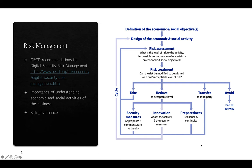If you decide to reduce the risk, you can put in place security measures — controls — to actually mitigate or reduce the risk. You can also innovate and adapt the activity so that the risk is no longer present, or change the activity to avoid that risk altogether. You could also put in measures that create preparedness, which will reduce risk — for example, if you can quickly act on any incident, the overall impact to the organization will be less.